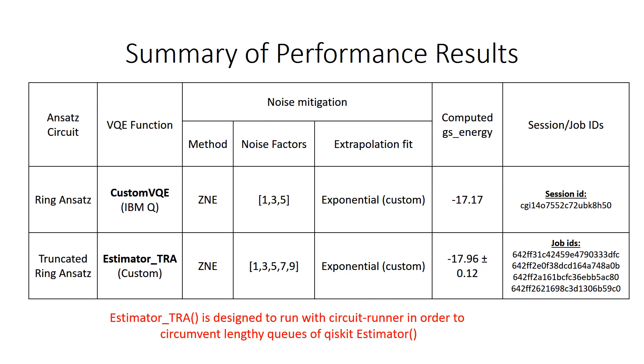The performance comparison between the two types of ansatz. I should point out that I found it much easier to run ring ansatz, the untruncated version, with the custom VQE function provided by the IBM Q code template. However, the relative error was in excess of 1%.